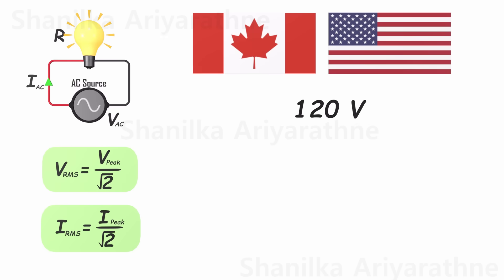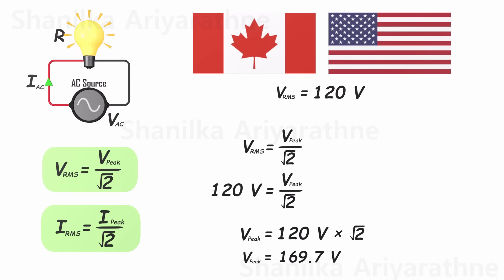If your household voltage is 120 volts, this represents the RMS value of your domestic AC supply. Using our equation, you can determine the peak voltage of this supply, which amounts to approximately 169.7 volts.